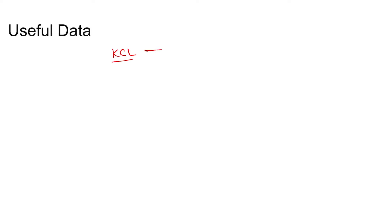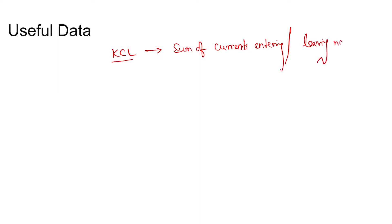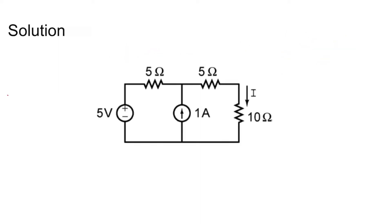The useful data we need in order to solve this question is that KCL — Kirchhoff's Current Law — states that the sum of currents entering or leaving a node is zero. Coming to the solution, we need to find this value of current I.